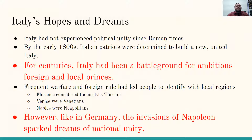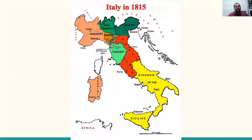Italy's hopes and dreams. Italy had not experienced political unity since Roman times, and by the early 1800s, Italian patriots were determined to build a new, united Italy. For centuries, Italy had been a battleground for ambitious foreign and local princes. Frequent warfare and foreign rule had led people to identify with local regions. People living in Florence considered themselves Tuscans, Venetians in Venice, Neapolitans in Naples. However, like in Germany, the invasions of Napoleon sparked dreams of national unity.